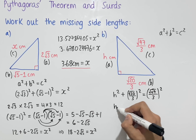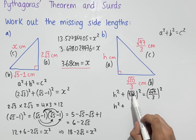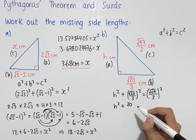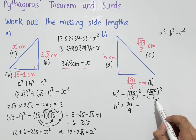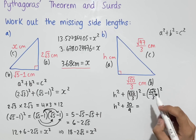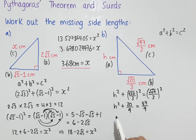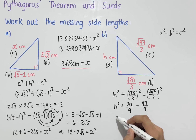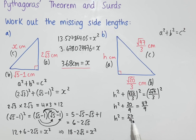Simplifying: h² stays the same. (√(20/3))² = (√20 × √20) / (3 × 3) = 20/9. And (√(47/3))² = (√47 × √47) / (3 × 3) = 47/9. To solve for h, we subtract 20/9 from both sides: h² = 47/9 − 20/9 = 27/9. Simplifying, 27 ÷ 9 = 3, so h² = 3.